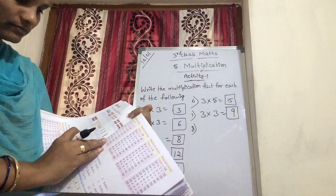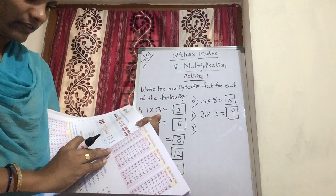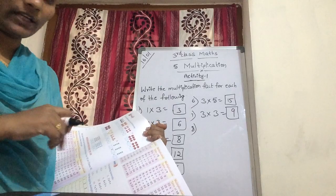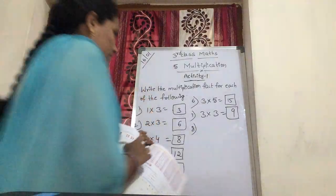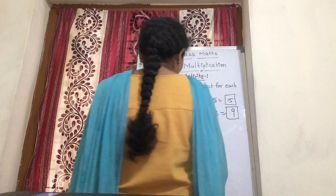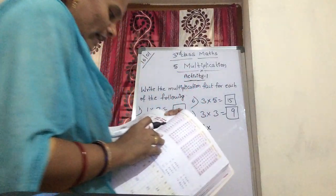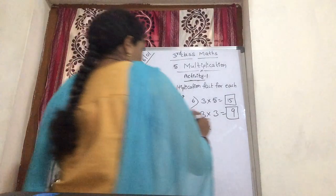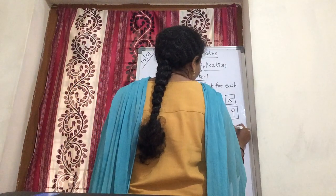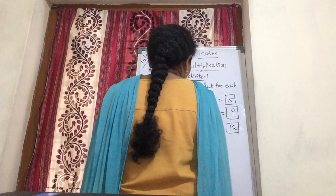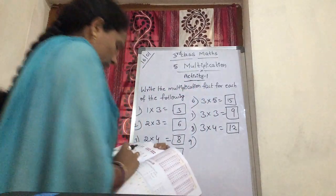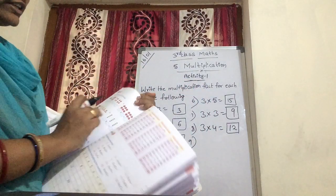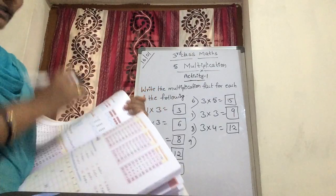Now, here some square rows are there. How many rows? 1, 2, 3 — three rows. Each row having how many squares? 1, 2, 3, 4 squares. So, 3 fours are 12. Total 12. Each group has 4, and there are 3 groups.